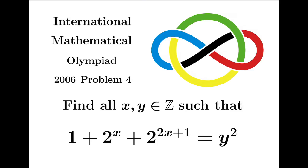Let's take a look at this problem taken from the International Mathematical Olympiad 2006. It says, find all integers x, y such that 1 plus 2 to the x plus 2 to the 2x plus 1 equals y squared.